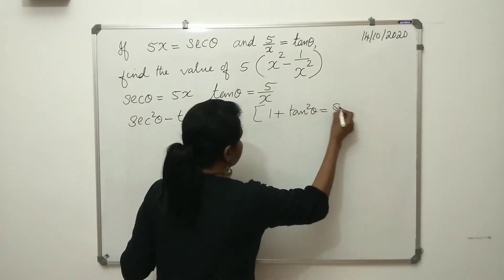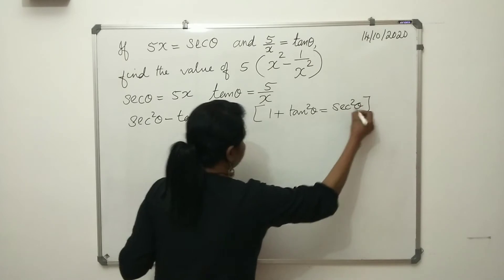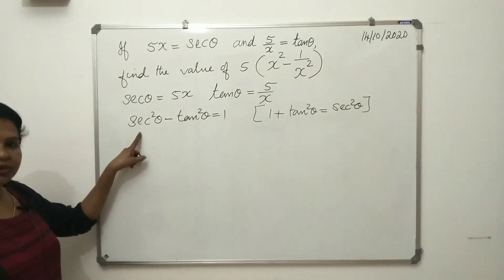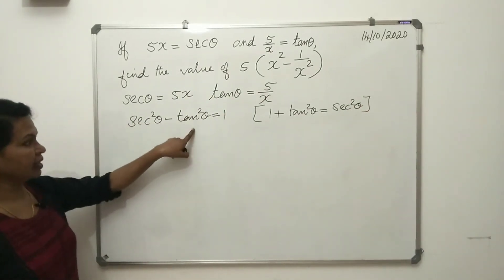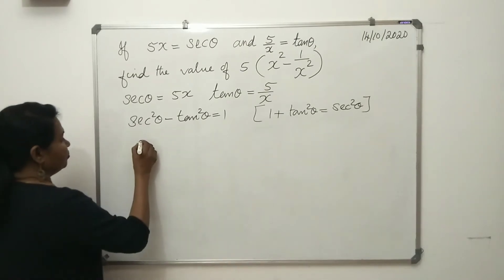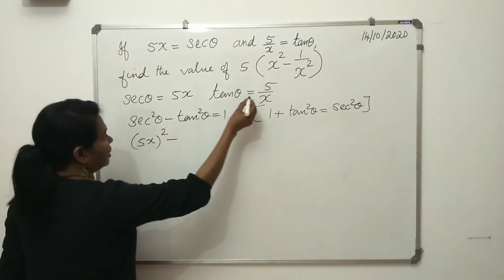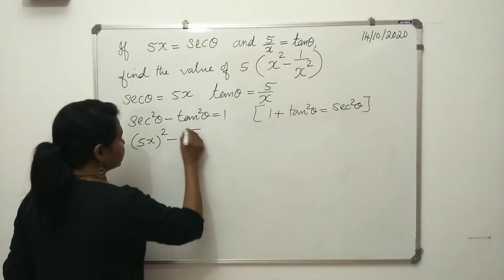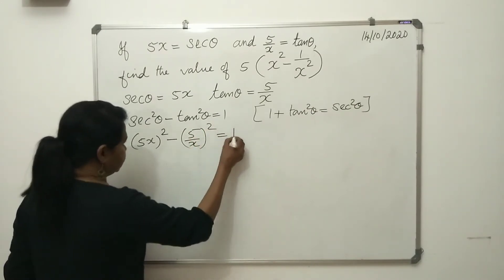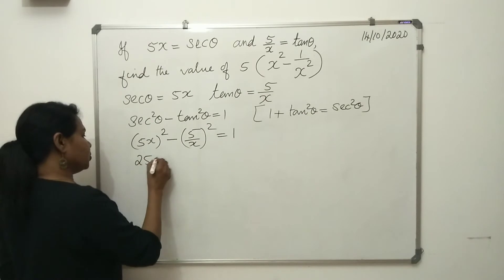Now substituting the value of secθ and tanθ, we get (5x)² minus (5/x)² equals 1. That is, 25x² minus 25/x² equals 1.